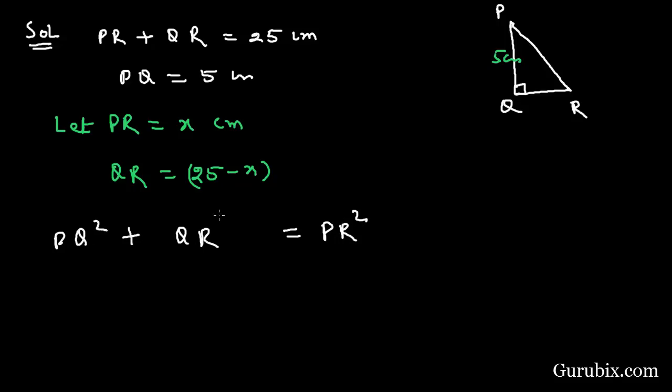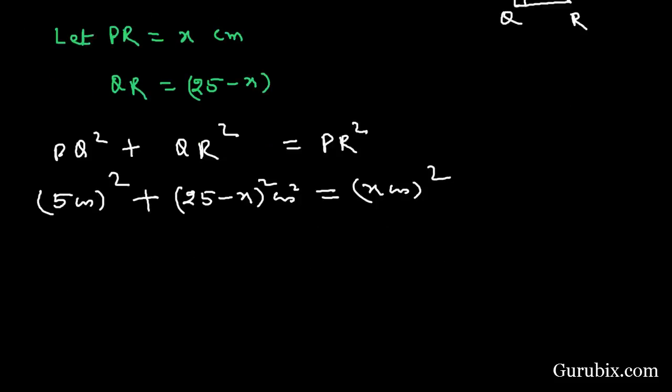PQ is given 5 centimeters, then it will be 5 centimeters squared. QR is 25 minus x centimeters squared, so we shall find the square of it. Here we have PR, PR is x centimeters squared.